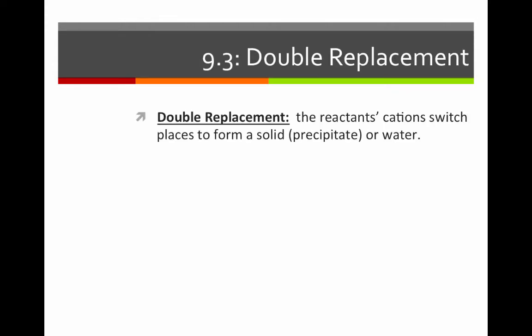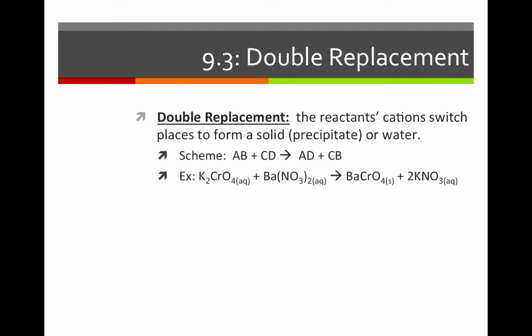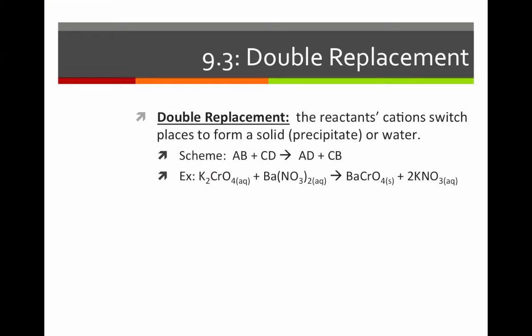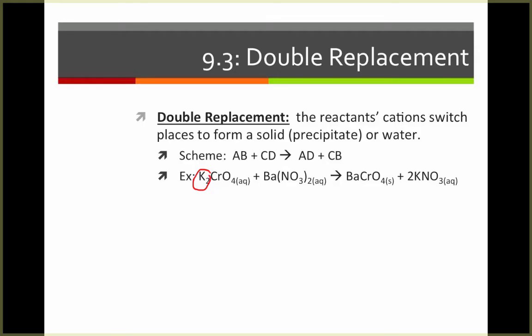A double replacement reaction is a reaction in which the reactants' cations switch places to form a solid precipitate or water. The scheme is AB plus CD yields AD plus CB. For example, here we have potassium chromate and barium nitrate reacting. The cation from one compound and the cation from the other will switch places to give us barium chromate and potassium nitrate.